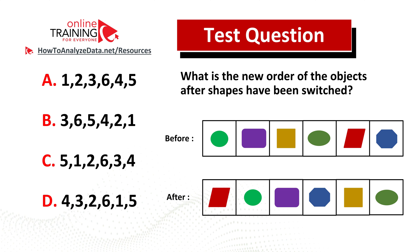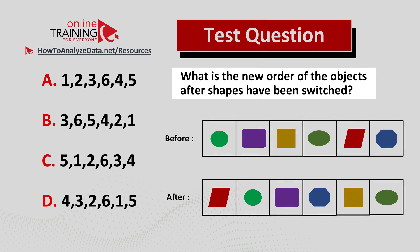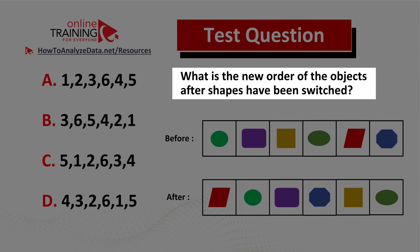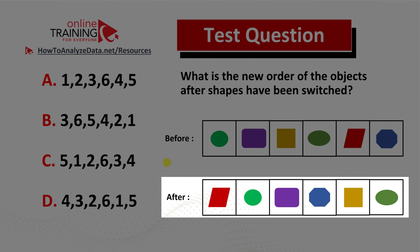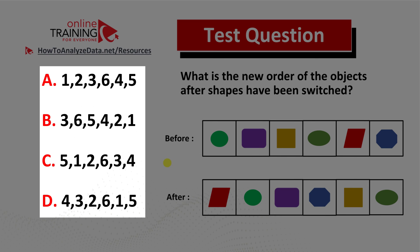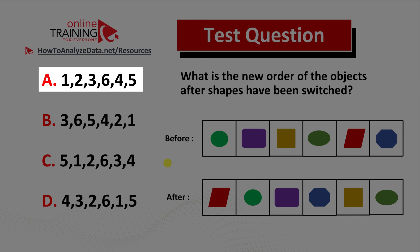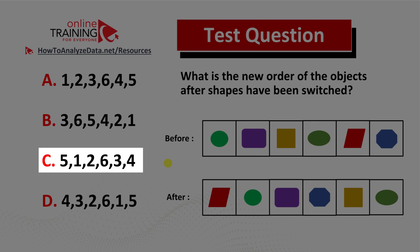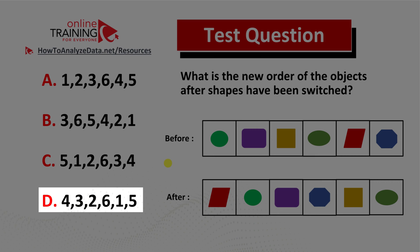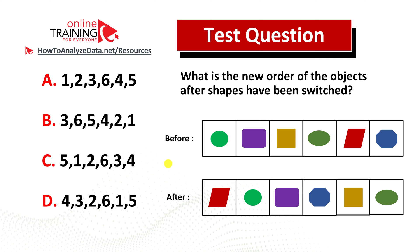Let me share with you a tricky question from the real test. What is the new order of the objects after shapes have been switched? You have a before picture and an after picture of the same objects in a different order, with four choices: choice A one two three six four five, choice B three six five four two one, choice C five one two six three four, and choice D four three two six one five. Now might be a good time to pause this video to see if you can come up with the solution on your own.